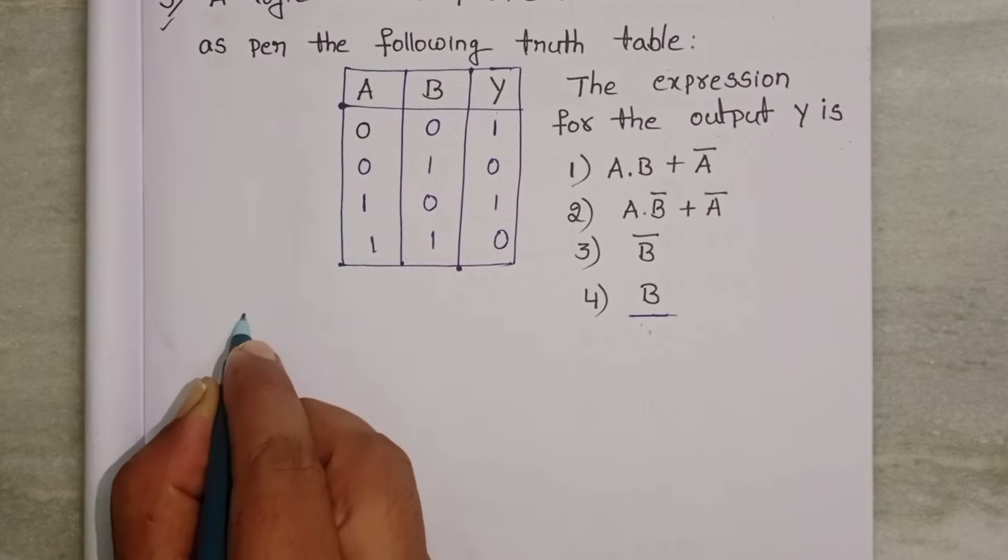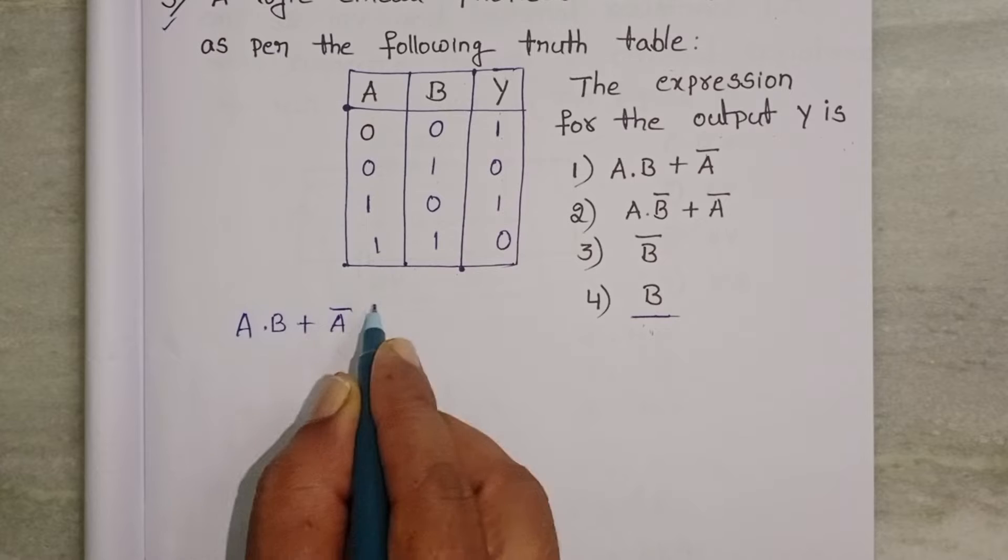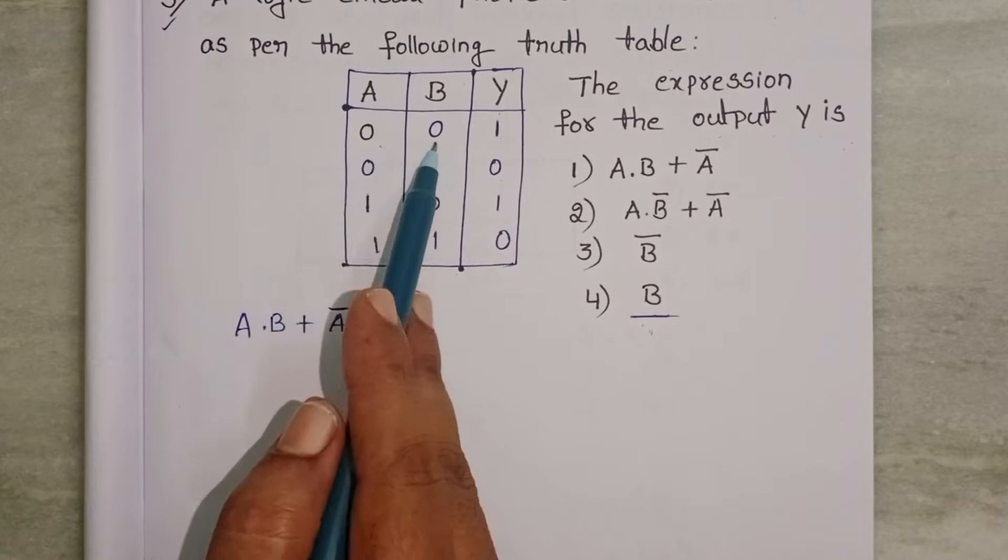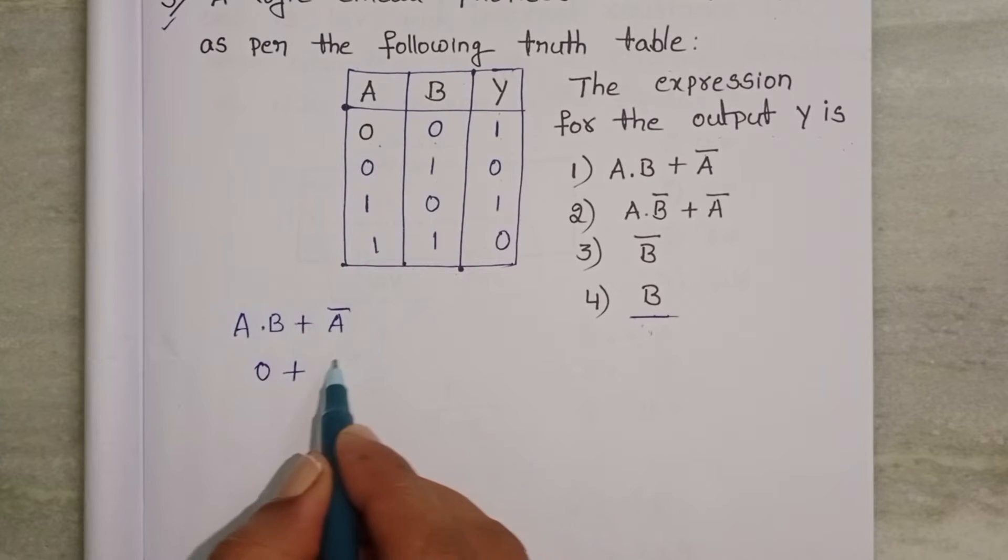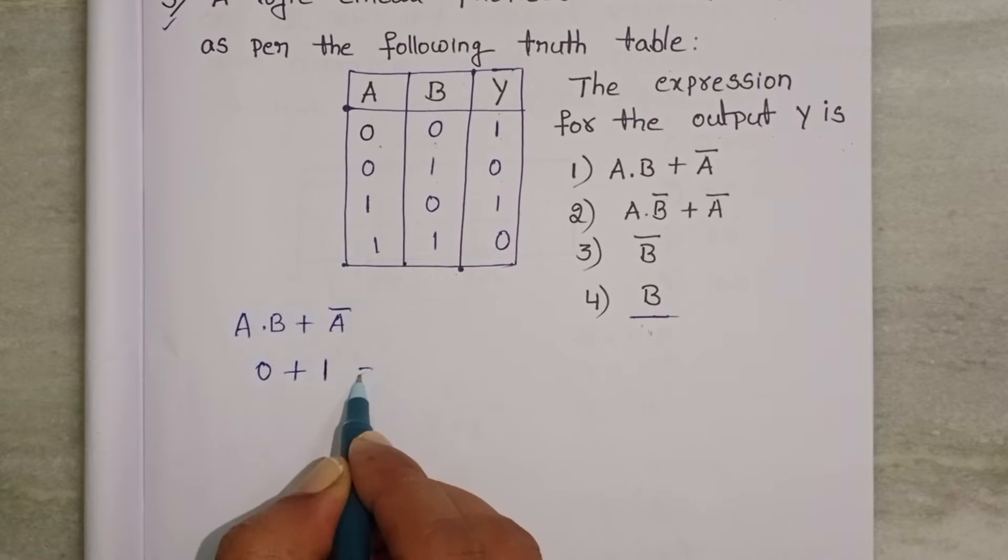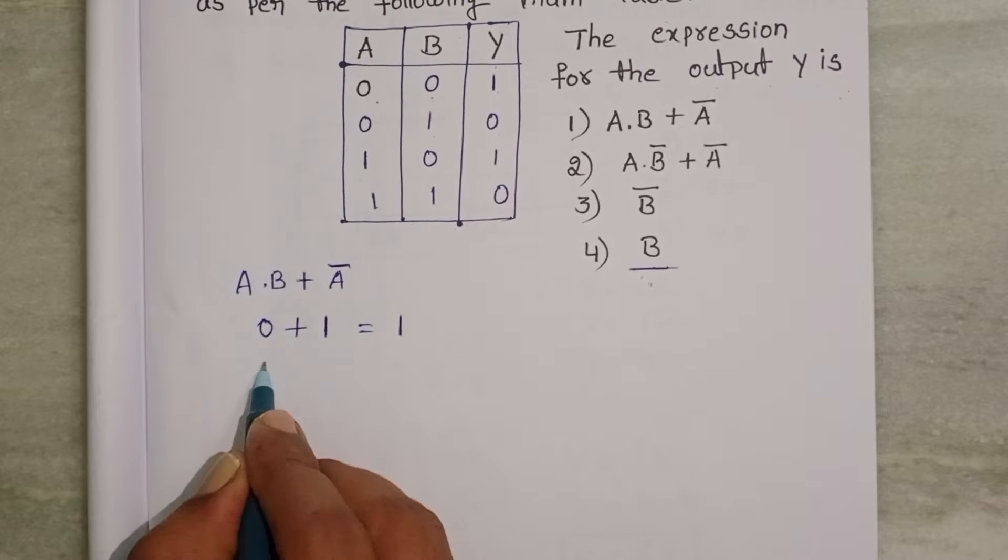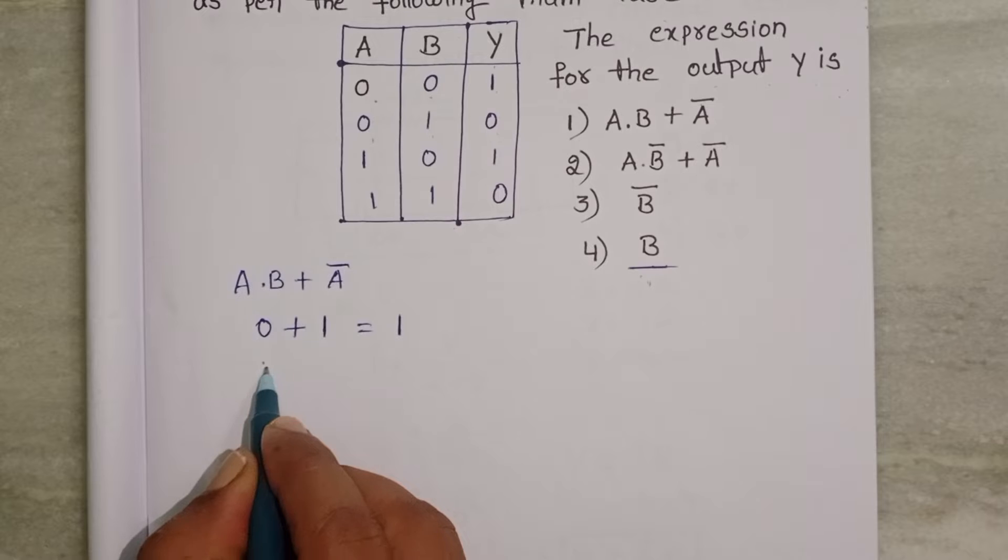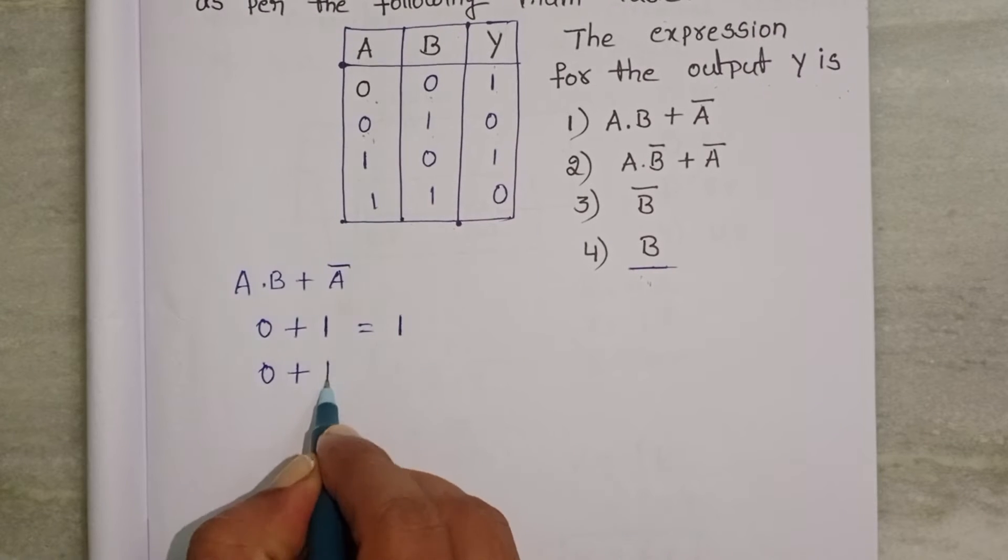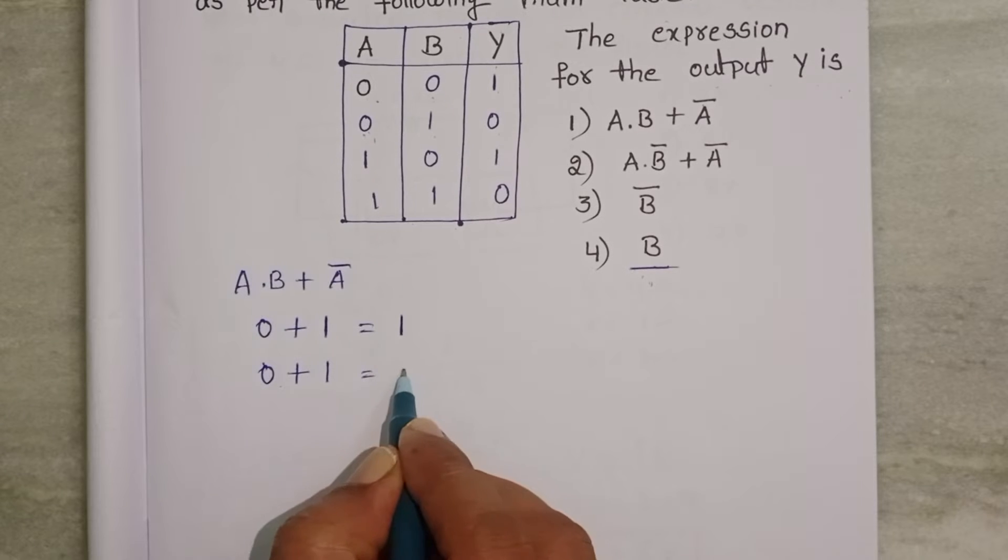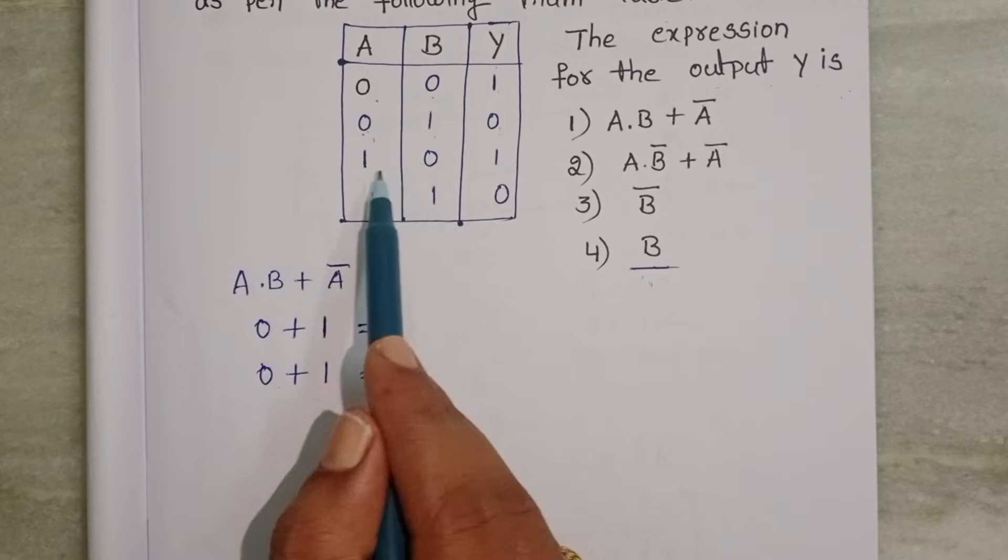Take the first option. a into b plus a bar. a bar means a naught. 0 into 0, 0 plus a is 0 then a naught is 1. 0 plus 1 equals 1. Output 1. Take the second one. 0 into 1, 0 plus a is 0. So a naught is 1. 0 plus 1 equals 1. But here output is 0. So no need to check remaining inputs.